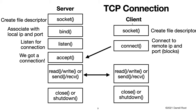On the client side it's simpler. We use the socket system call to create our file descriptor and then we connect to the remote IP address and port. When we connect it will block until it's connected. And then once we're connected, we can read, write, send, or receive data. Then when we're done we can close or shut down.